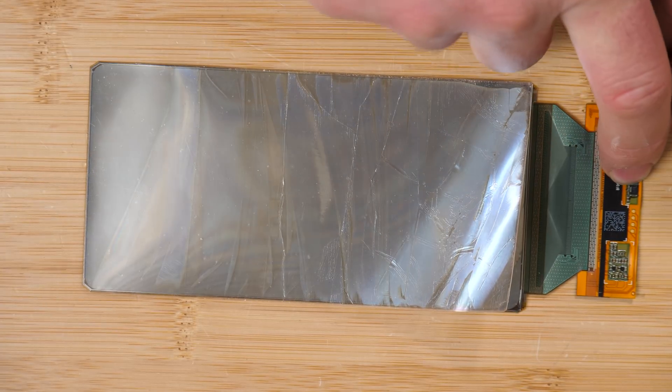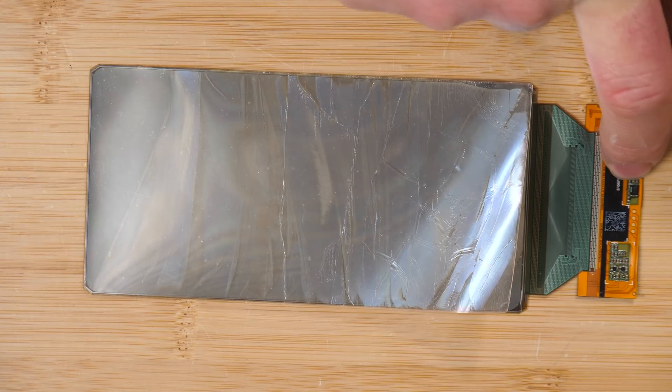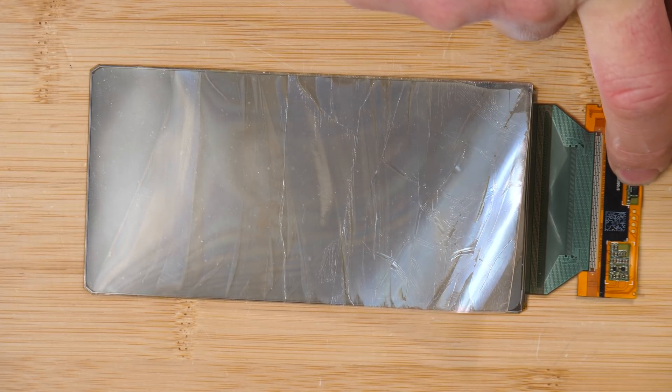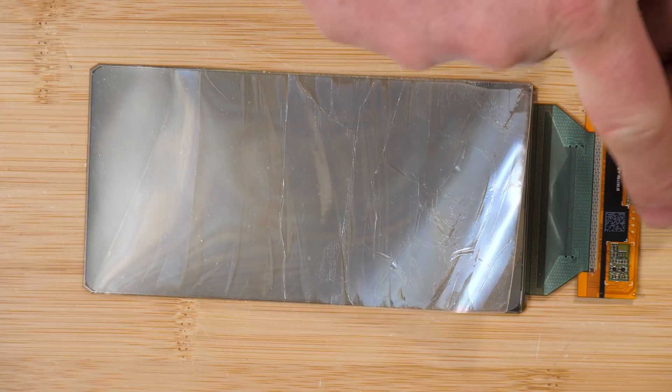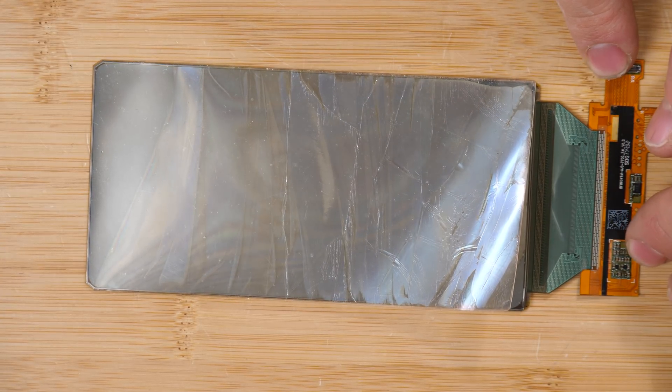And then there's some sort of IC here and I want to look at that under the microscope. I believe I've looked up the part number on that and didn't have a lot of luck, but I want to try that again. And then we've got a bunch of passives here, so little capacitors and things.